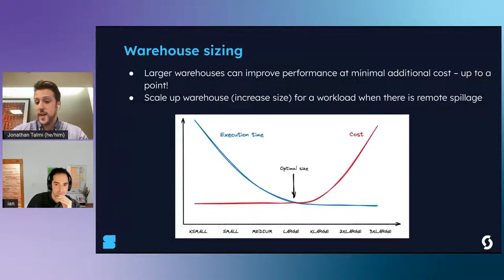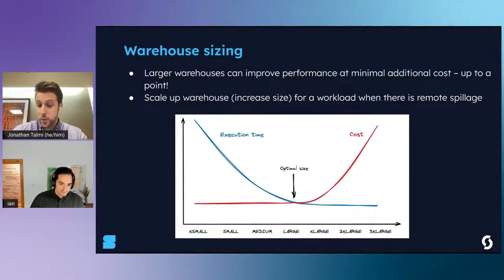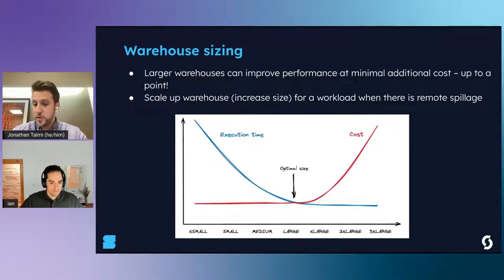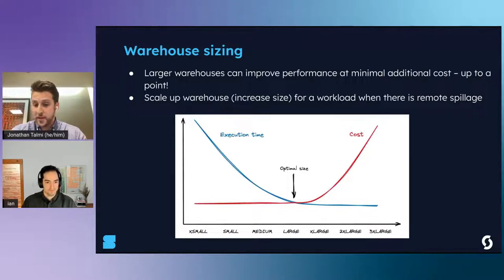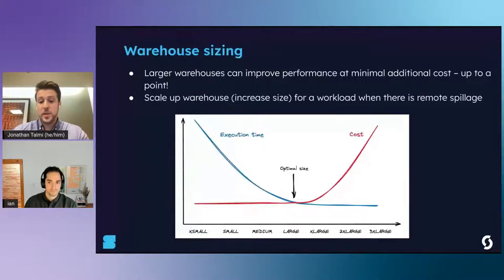Sizing warehouses correctly is also one of the easiest and most effective strategies for reducing costs. Larger warehouses can improve performance at minimal additional cost as long as query execution time continues to halve. At a certain point, performance will stop improving as the optimizer can no longer parallelize across nodes, or it gets worse due to over-the-network costs outweighing performance benefits. Warehouses should be scaled up for specific workloads when you see remote spillage in the query profile - remote spillage occurs when the warehouse is not large enough and has to store data in a remote location, leading to data transfer and long query times. But upsizing should only be done after exhausting all query optimization opportunities.